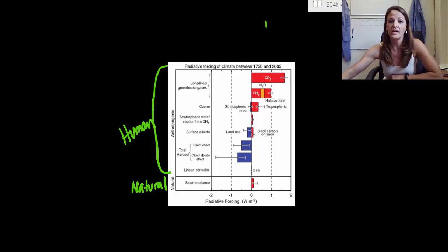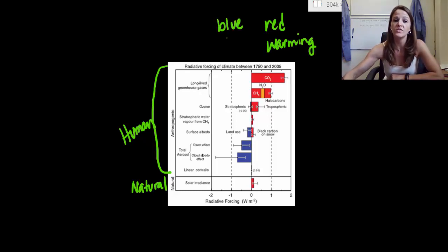And so remember, our red, which is on our right side, are our warming forces. Where our blue, which is on the left side, are our cooling forces. And so red is positive, blue is negative.